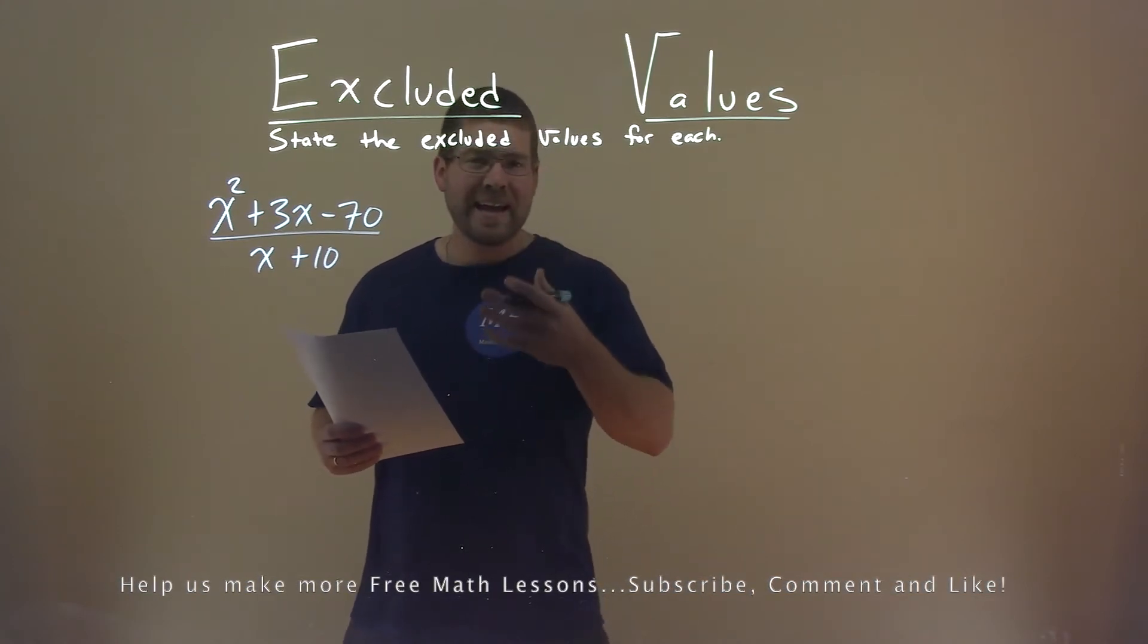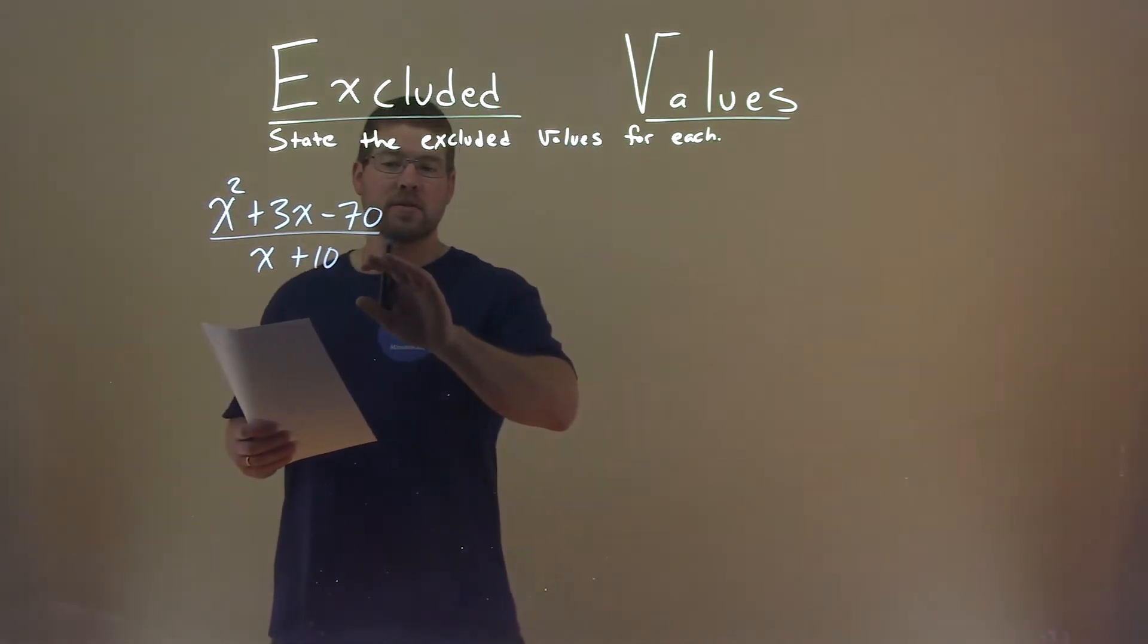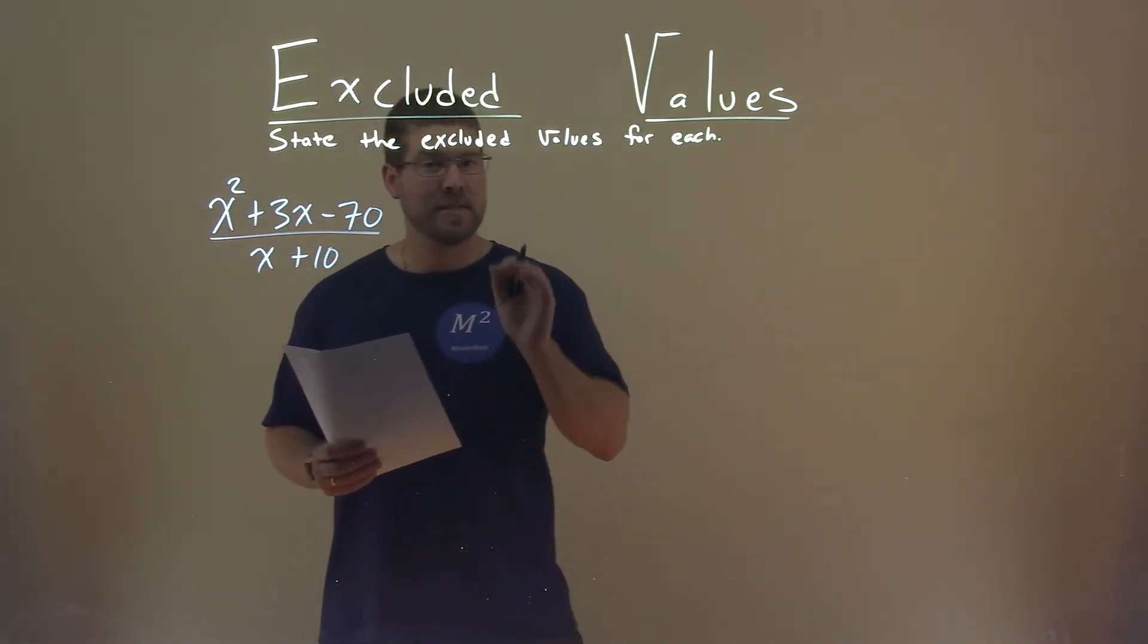Well, we know we cannot divide by 0, so we're trying to find here the value in which, for x, for the denominator is equal to 0.